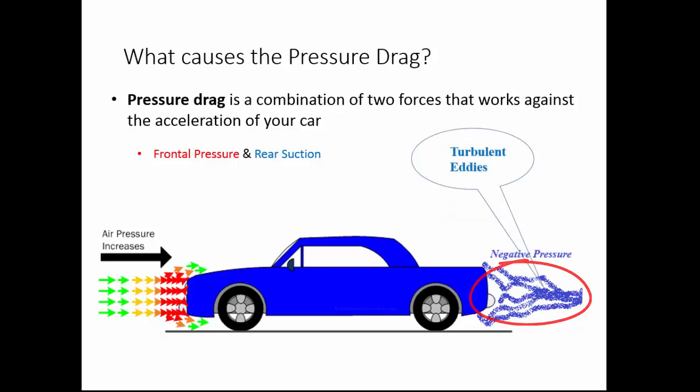Both are the contributors of the pressure drag. The negative pressure is caused mainly because of the formation of turbulent edges, which is actually the consequence of flow separation. Hence, streamlining is essential to reduce the frontal pressure and the rear suction. At this point it is essential to discuss the streamlining of a vehicle body.